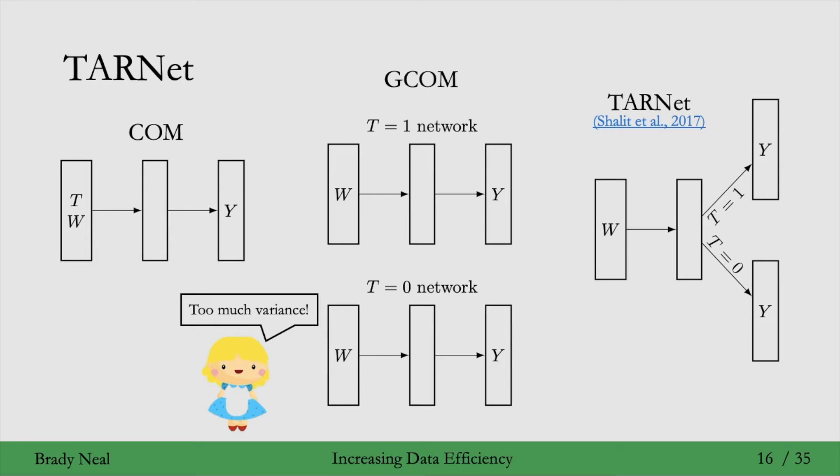This motivates a sort of hybrid architecture that we have in TARNET, where we use all of the data to train this network. We only give W as input, and then the network branches off into two heads, one for the treatment group and one for the control group. The hope is that this will take the best of both worlds in COM estimation and G-COM estimation.